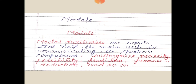Modal auxiliaries are used along with the base form of the main verb. The base form of the verb without 'to' is known as the bare infinitive. So 'to + verb' is called the infinitive, and when we do not use 'to' with V1, it is called the bare infinitive.